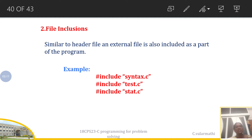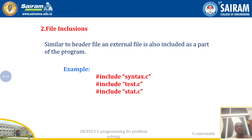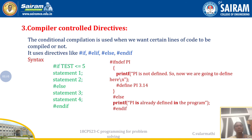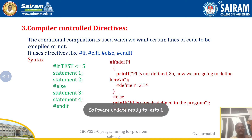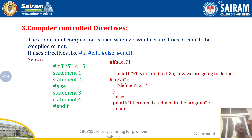This is about file inclusion. The third part of preprocessor directives is compiler controlled directives. In this, we make decisions using `#if`, `#else`, `#elif`, `#ifdef`, `#ifndef`, and `#endif`. These are the preprocessor directives used to control compilation decisions.